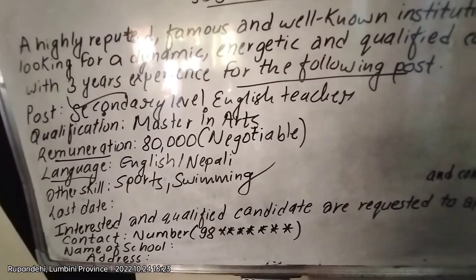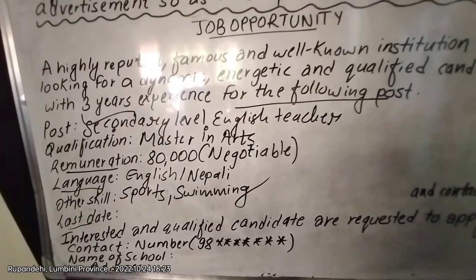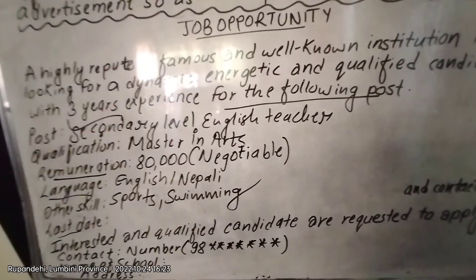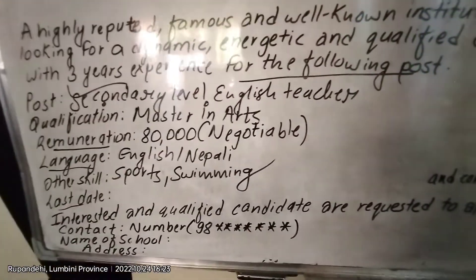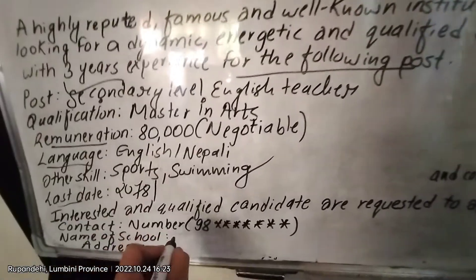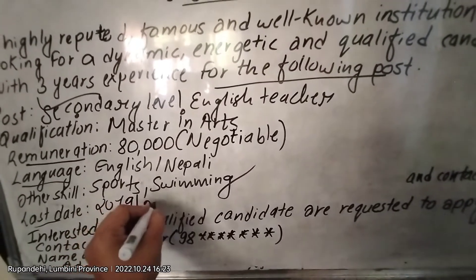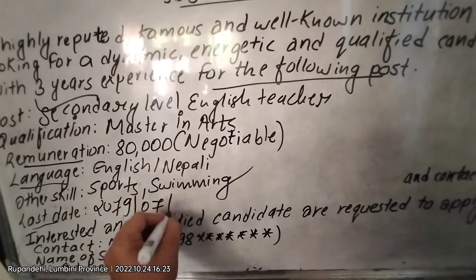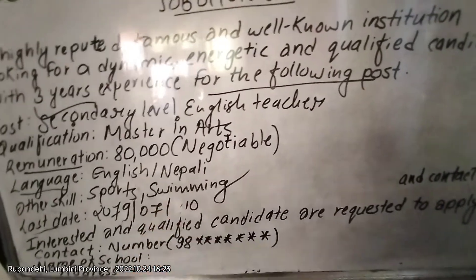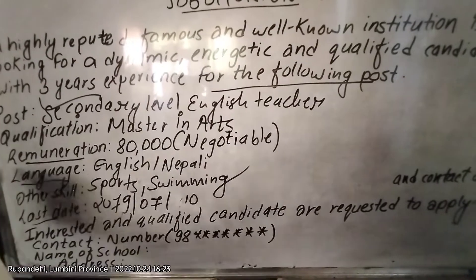Now next is the last date — up until when can the teacher submit this application for this advertisement? You have to write a date; you can put any date here. For example, you could write 2079/07/10.